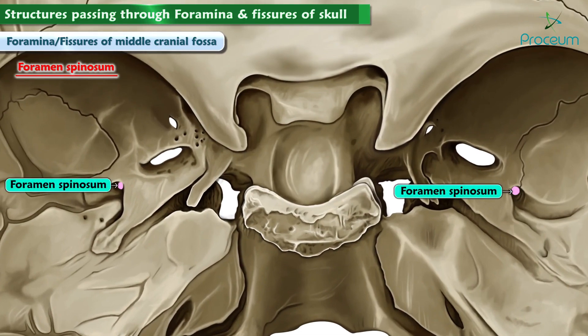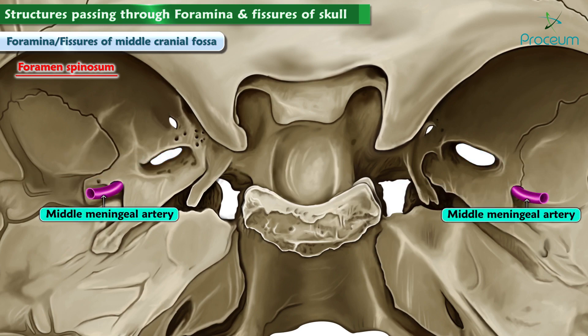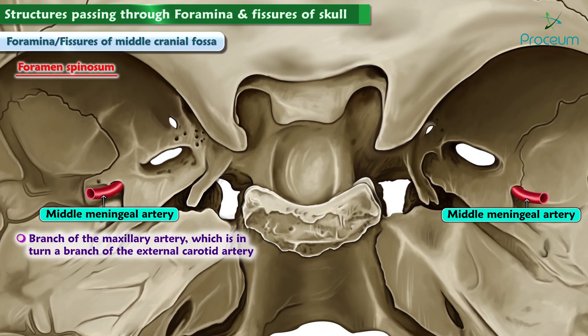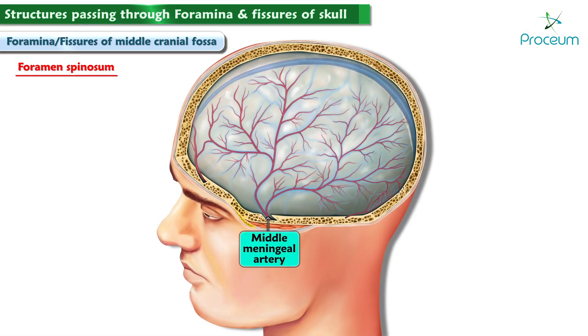Foramen spinosum lies posterior and lateral to the foramen ovale. It allows the middle meningeal artery to enter the skull. The middle meningeal artery is a branch of the maxillary artery, which in turn is a branch of the external carotid artery, and it supplies blood to the dura mater that surrounds the brain.